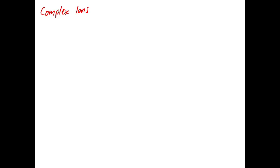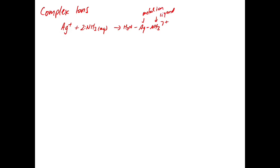In this video, we're going to look at the last topic in Chapter 17, which is complex ions. We saw an example of this in lab when we did experiment 13. When we wanted to dissolve silver chloride into aqueous solution — normally it's insoluble — we added ammonia and it formed a complex of silver ammonia: silver plus two ammonia in solution, forming Ag bound to two NH3 groups with a plus one charge. A complex ion has a metal ion in the center and ligands bound to it — in this case, ammonia.